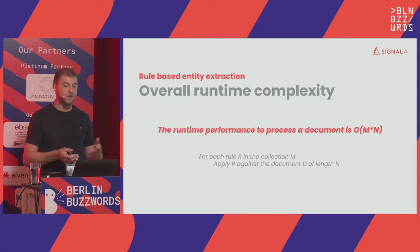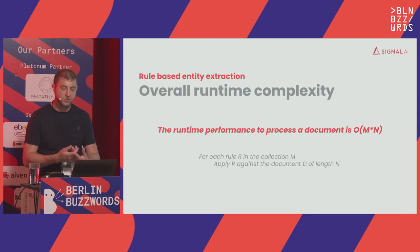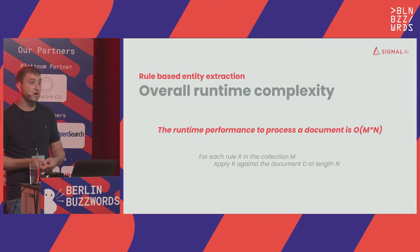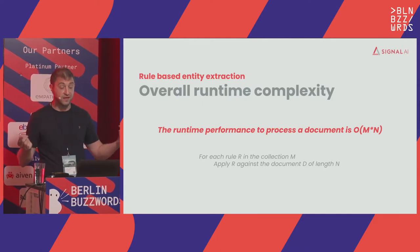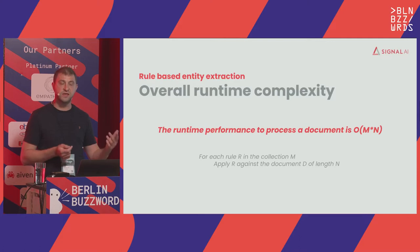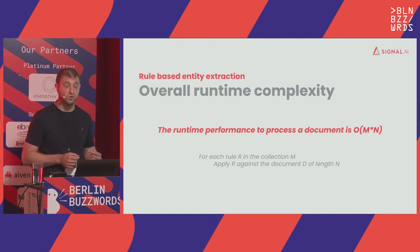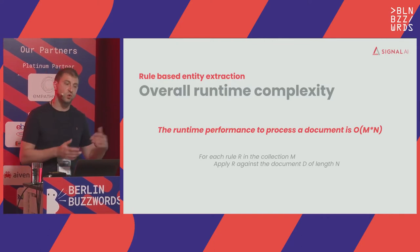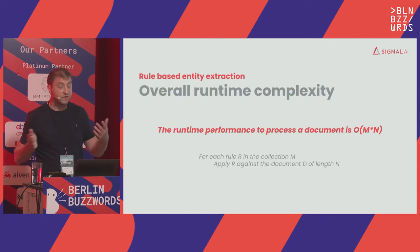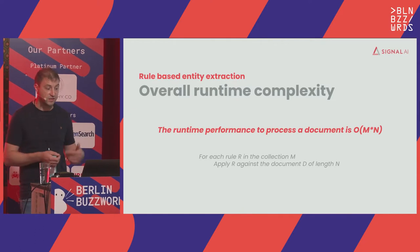The overall runtime performance to process a document is O(M × N): for every rule in our collection M, we have to apply it to the document of length N. That is in line with the problem we were experiencing — the more rules we had, the more time the service took. And every time a document was much longer than average, say from 10,000 to 100,000 characters, that had an amplified effect causing huge spikes.